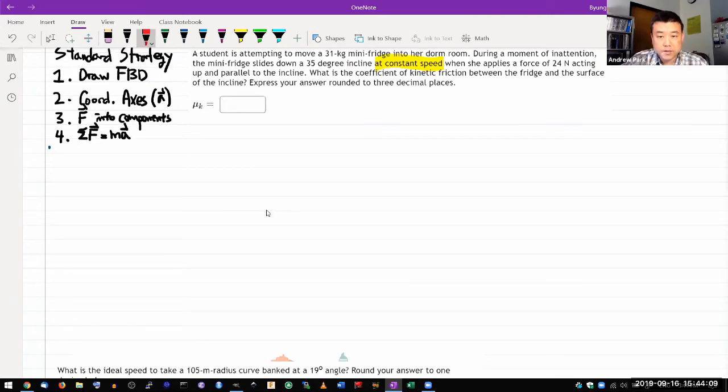When she applies a force of 24 Newtons acting up and parallel to the incline. The reason I highlight the phrase 'at constant speed' is sometimes physics problem reading is like decoding. We give you pertinent information in plain language, but you have to pause and think about what it really means to actually use it in your problem solving. When it says constant speed, what it's saying is acceleration is equal to zero as this fridge is sliding down.